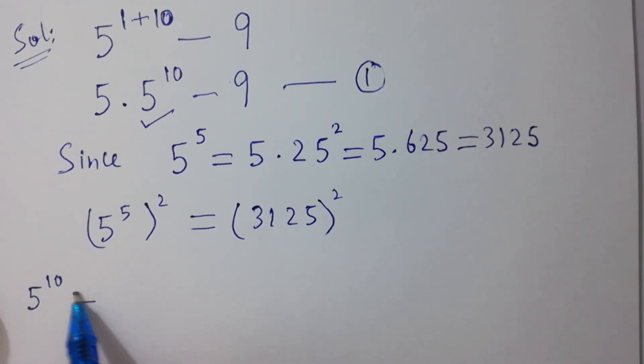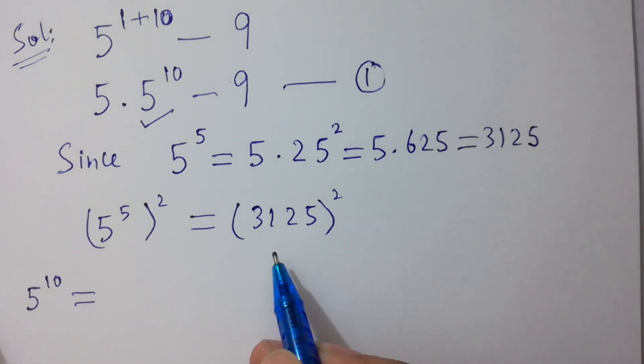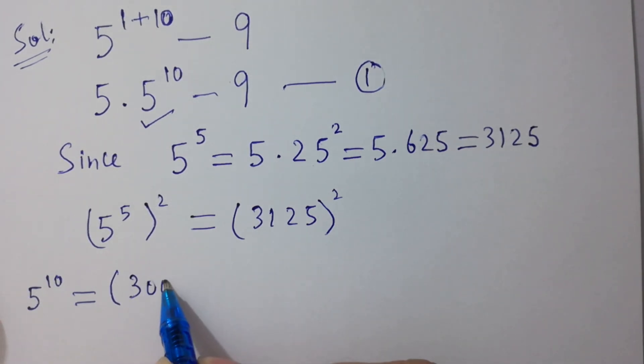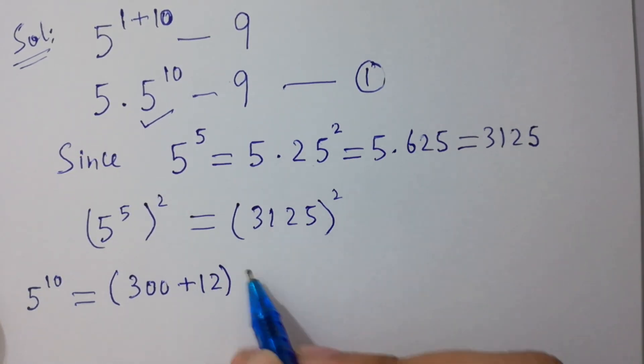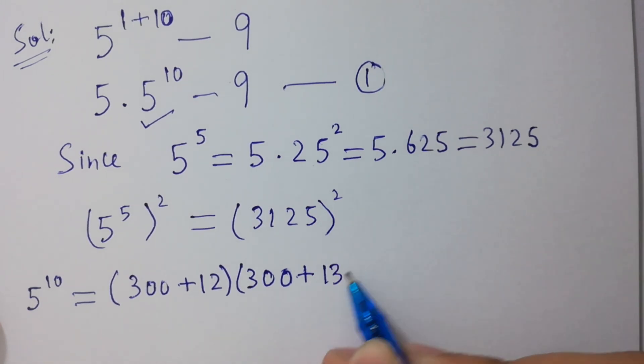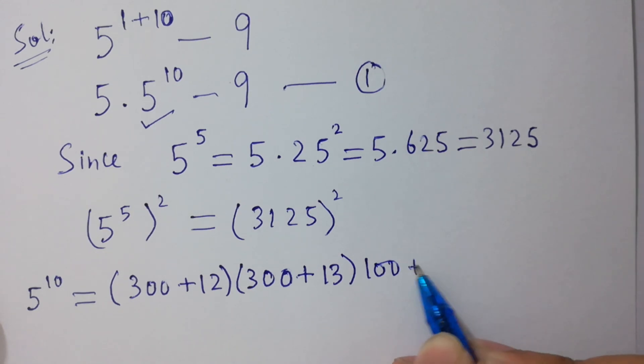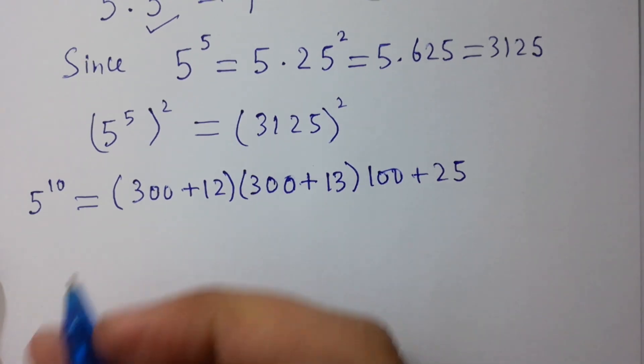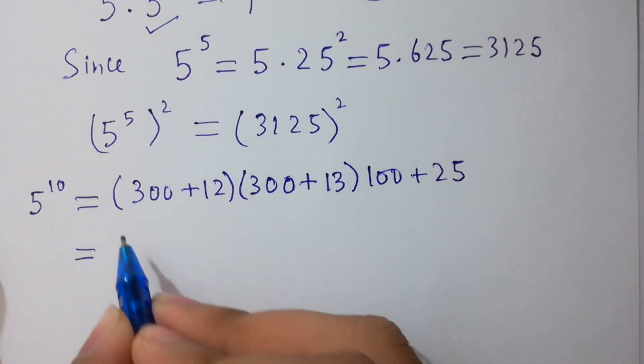10 equals 3125 squared, which will be equal to 300 plus 12 times 300 plus 13, times 100 plus 25. Simplify it to get the solution. 300 times...